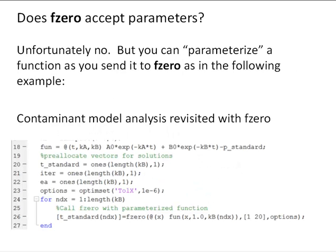But first let's talk about that other type of parameters, and those are the parameters in a mathematical model. And recall what we did with our root-finding functions that we developed is we used the varargin variable to pass multiple parameters through a function. fzero doesn't let you do that, but the way to do it is to parameterize the function as you send it to fzero in the input list.